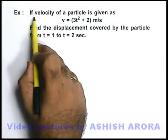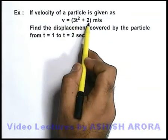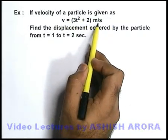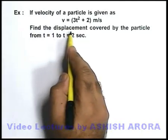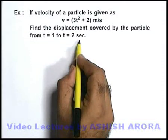In this question we are given that velocity of a particle is given as v equals 3t² plus 2 meters per second. We are required to find the displacement covered by the particle from t equal to 1 to t equal to 2 seconds.